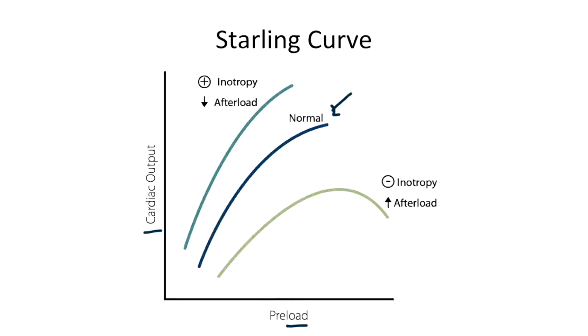As you can see, as preload increases, the cardiac output increases. This only occurs up to a point, and then we can see that the curve begins to taper off.